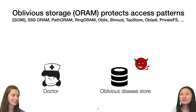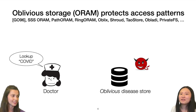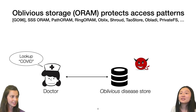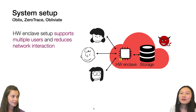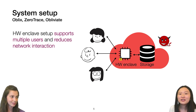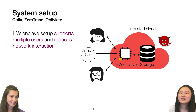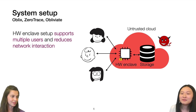Oblivious storage is a rich body of literature that aims to protect against these access pattern attacks. When the doctor looks up COVID, they run an oblivious storage protocol with an oblivious disease store, and the security guarantees mean the attacker cannot infer any additional information. Hardware enclaves have been a recent popular setup in oblivious storage — a hardware enclave co-located with storage in an untrusted cloud. This lets you support multiple users and also reduces network interaction because the hardware enclave and storage server are co-located in the same cloud, making the round trip a lot shorter.